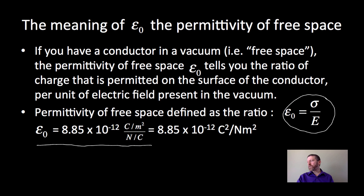And the units are—notice that the units are these units of sigma over the units of electric field. That gives us 8.85 times 10 to the negative 12 coulombs squared per newton-meter squared. So this is epsilon-naught, the permittivity of free space.